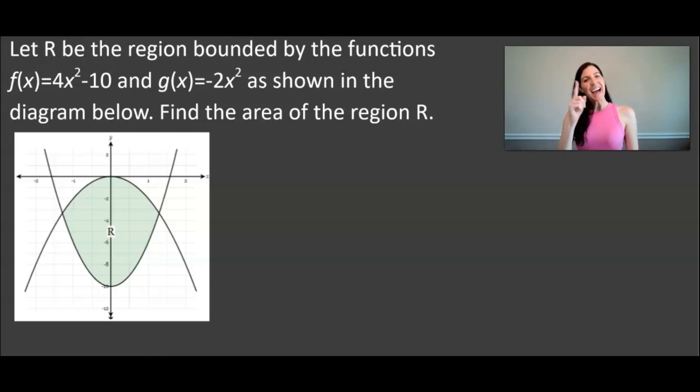So let's go on to this problem. It says let R be the region bounded by the functions f(x) = 4x² - 10 and g(x) = -2x² as shown in the diagram below. You can see that bounded region R in the diagram. We want to find the area of region R.